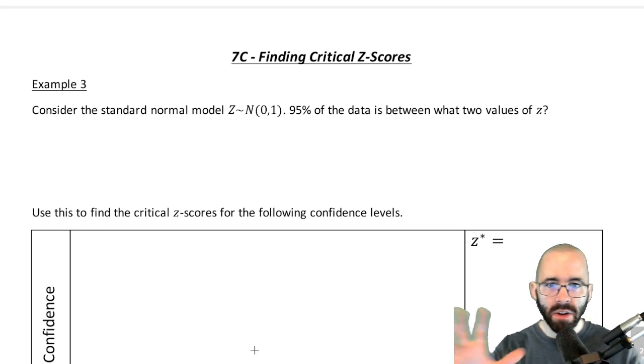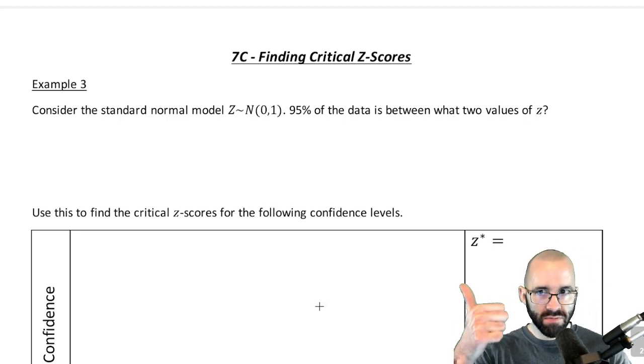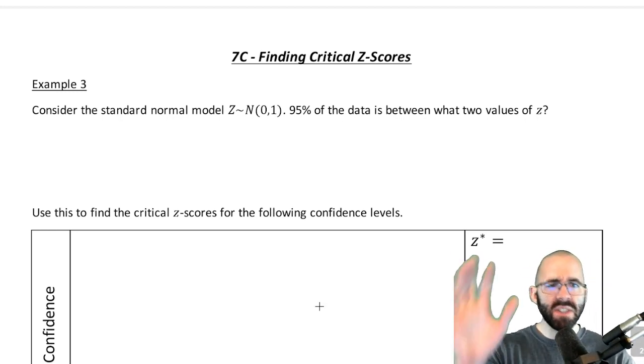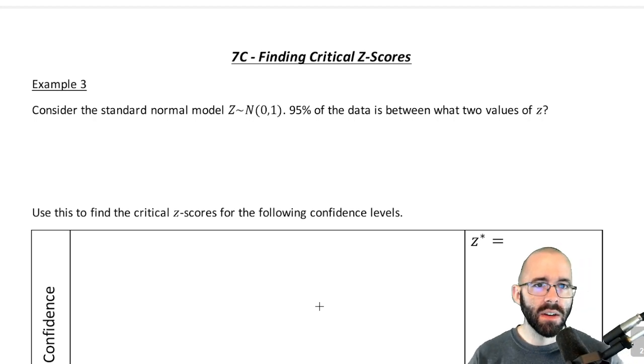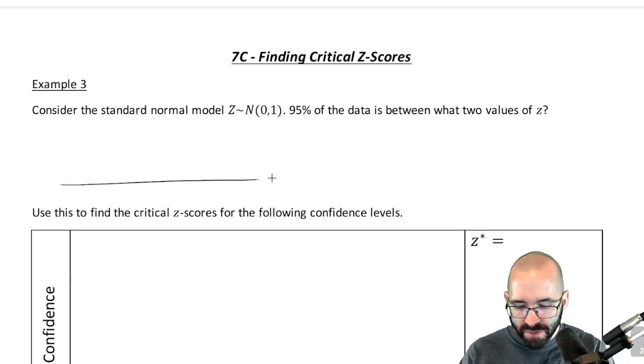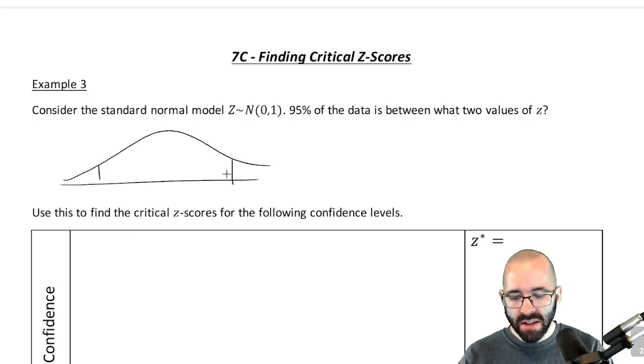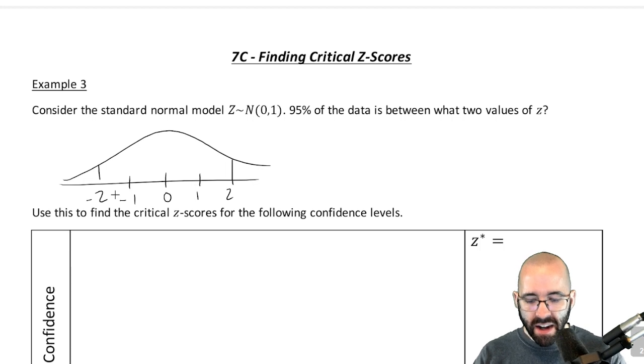Hopefully your empirical rule is ready to go and you say, well z should be about two, right? Because 95% of the data is within two standard deviations of the mean. So if we have a little graph, you should say that 95% of the data is within two standard deviations away from the mean. The 95% of the data should be between about negative two and positive two.